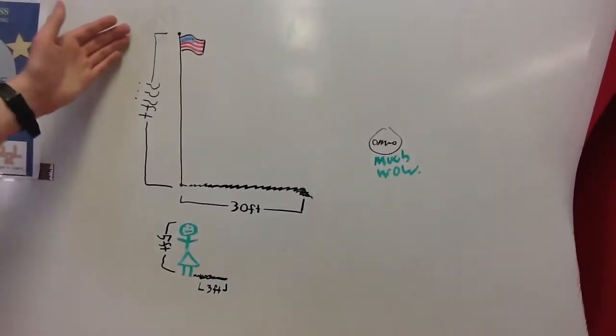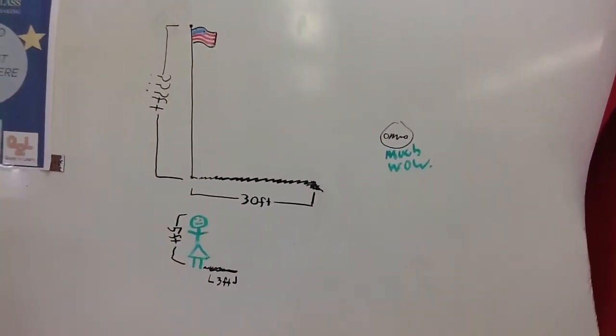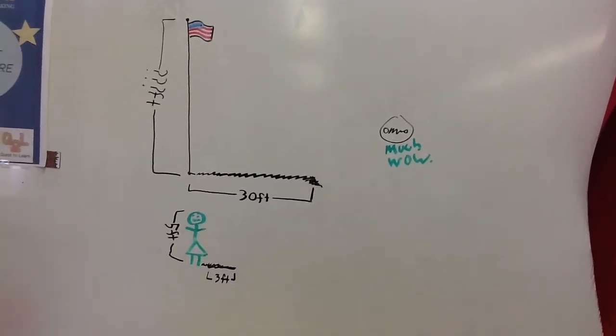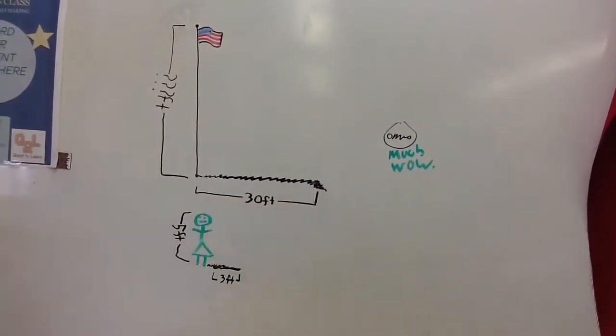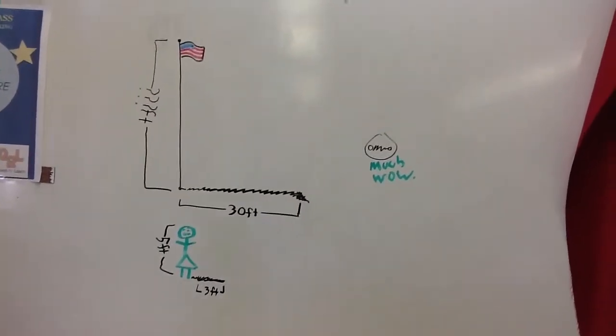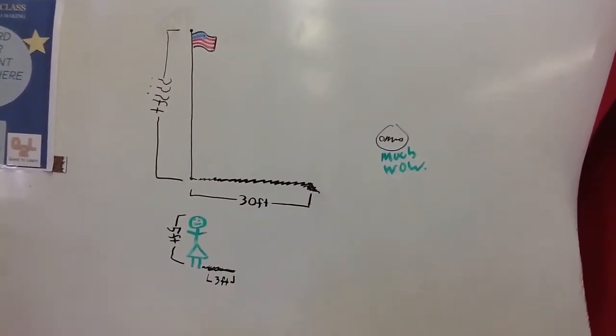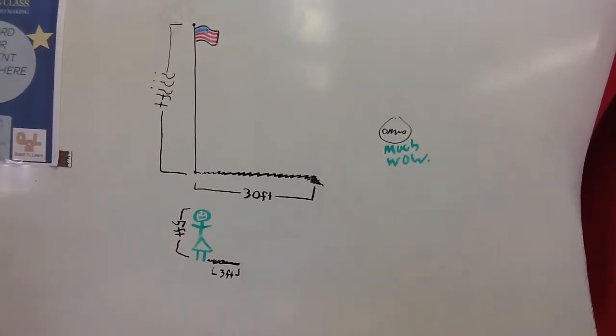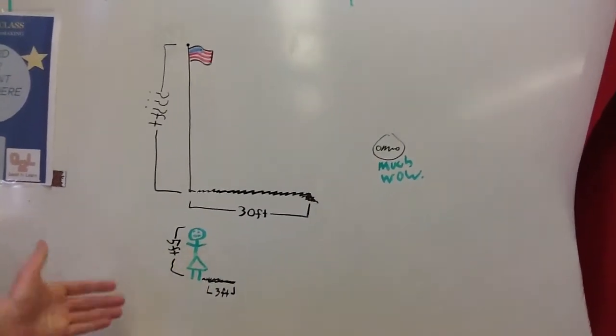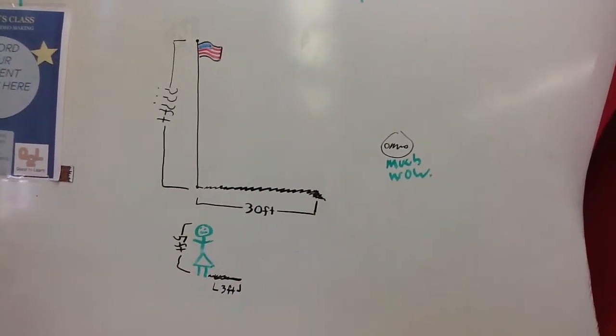As you can see, we have a beautiful flagpole, and next to it, a woman. The flagpole has a shadow length of 30 feet. The person has a shadow length of 3 feet. And the person has a height of 5 feet.